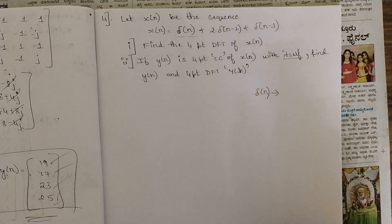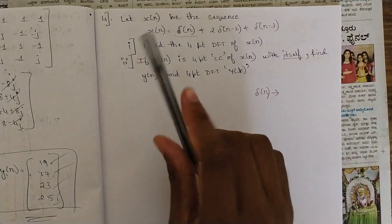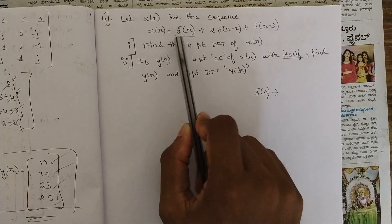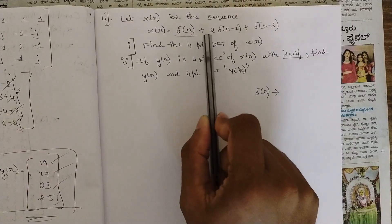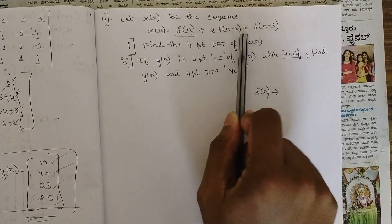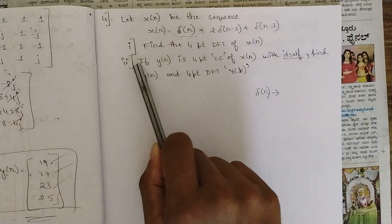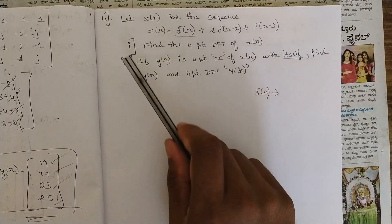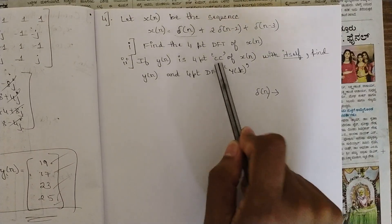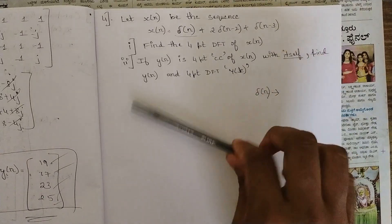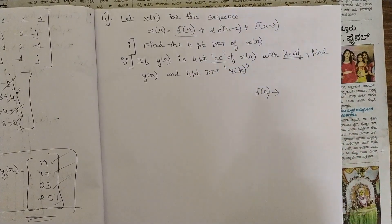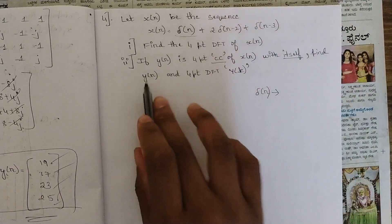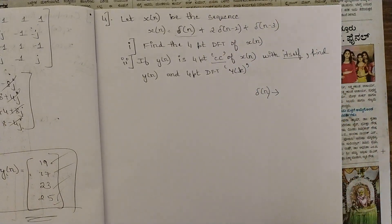So let's read the question now. Let x(n) be the sequence: x(n) = δ(n) + 2δ(n−2) + δ(n−3). The sub-questions are: find the 4-point DFT of this sequence x(n). Second, if y(n) is the 4-point circular convolution — CC stands for circular convolution — of x(n) with itself, find y(n) and the 4-point DFT y(k).